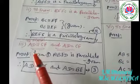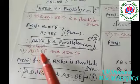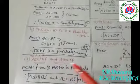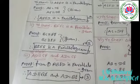For the third subdivision, we have to prove that AD is parallel to CF and AD is equal to CF. Since ABED is a parallelogram, AD is parallel to BE and AD is equal to BE — call this equation number three.